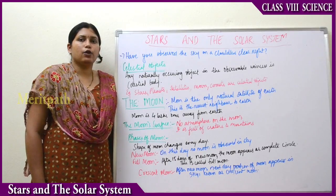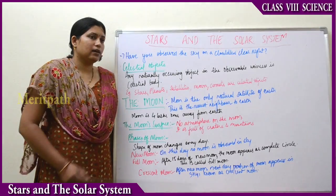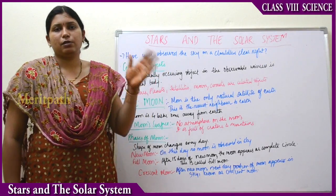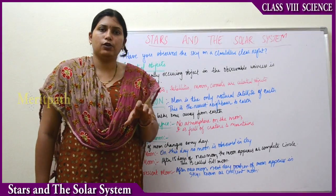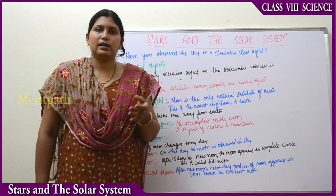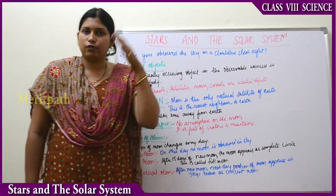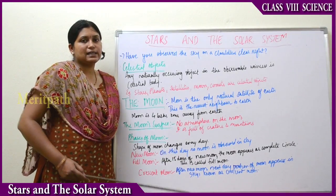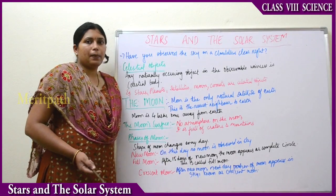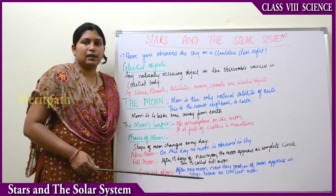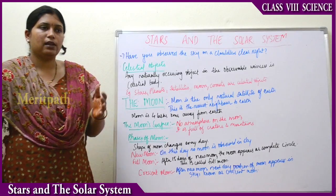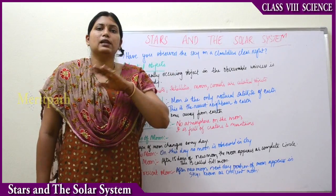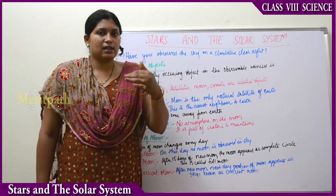Have you observed the sky on a cloudless, clear night? There is a difference in observing the sky from cities and from villages. Villages have less pollution, fewer lights, and not too many tall buildings. That is the reason the sky is clearer and more brightly seen from villages compared to cities, which have very tall buildings, many lights, and pollution.